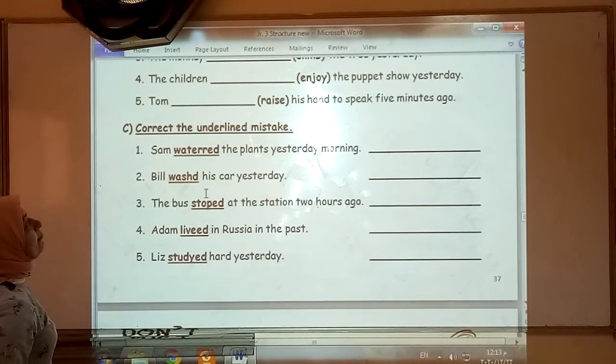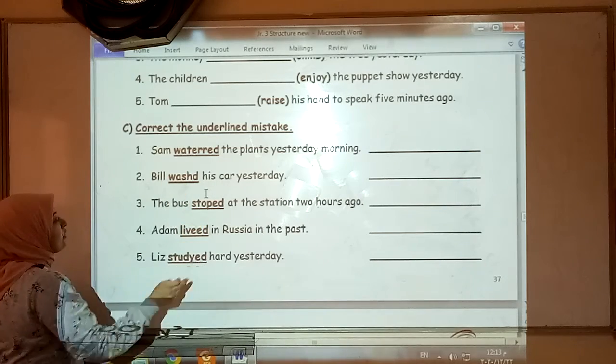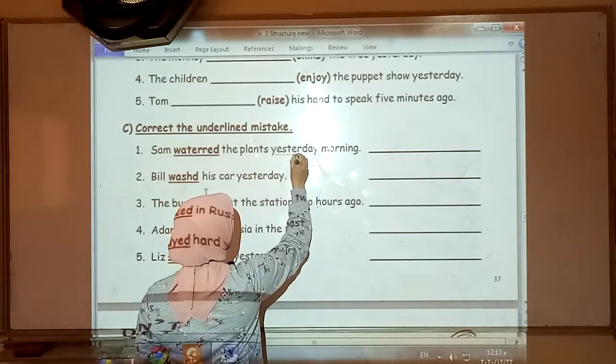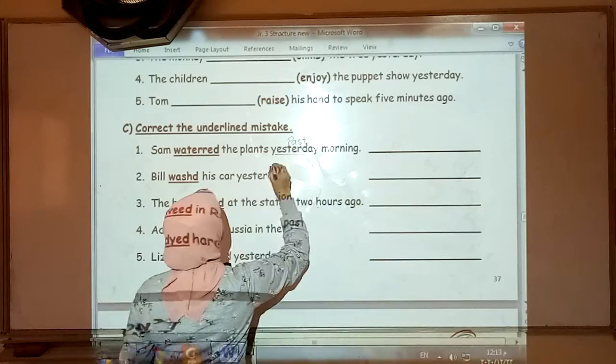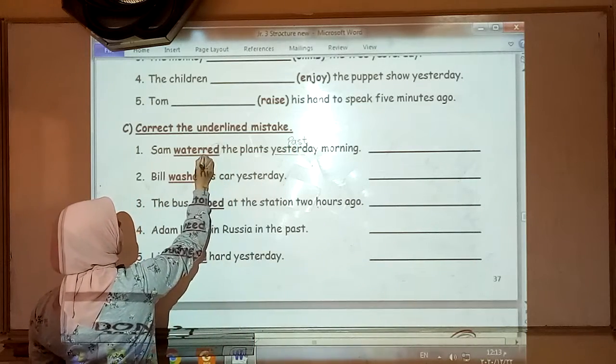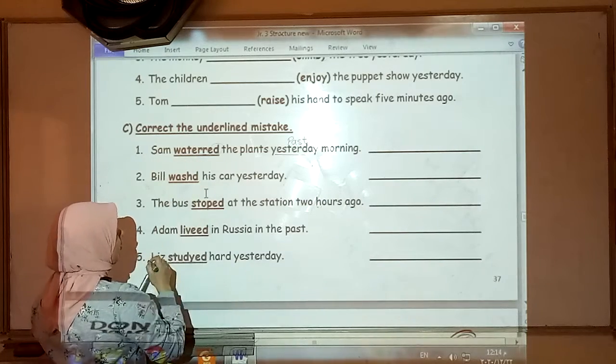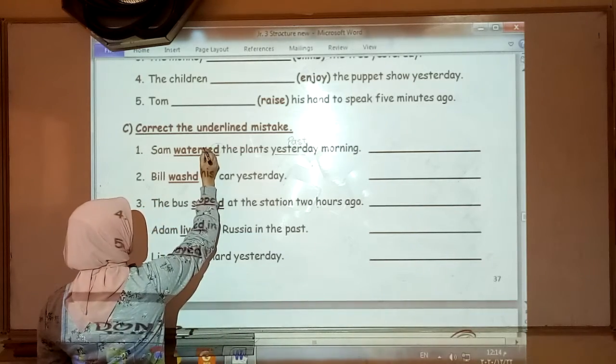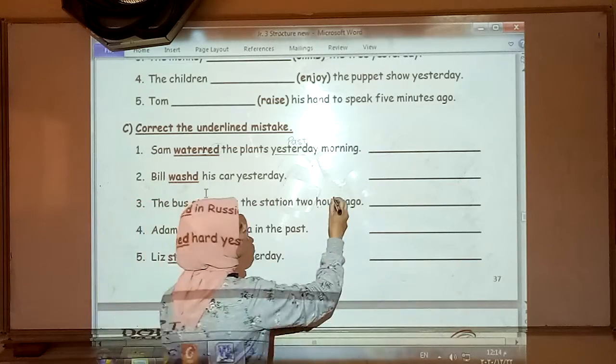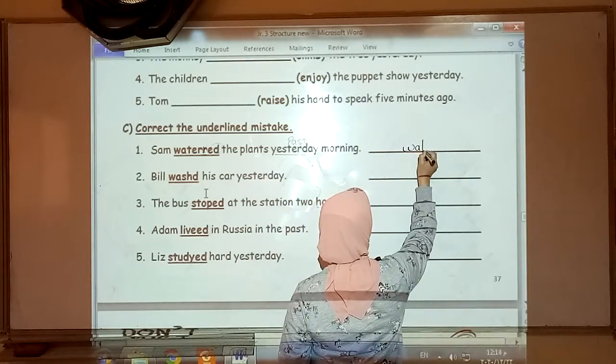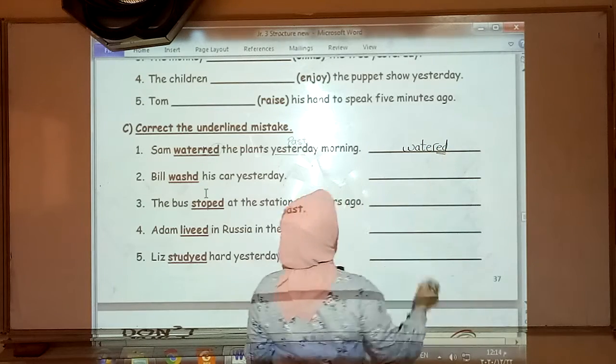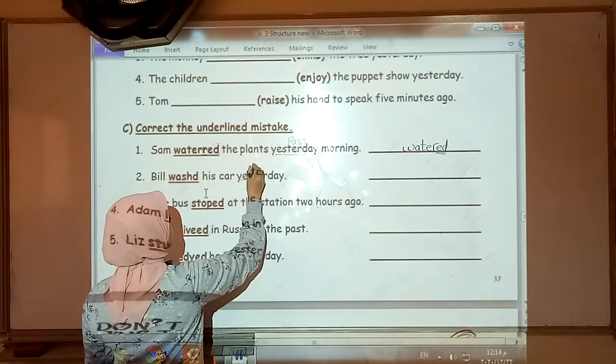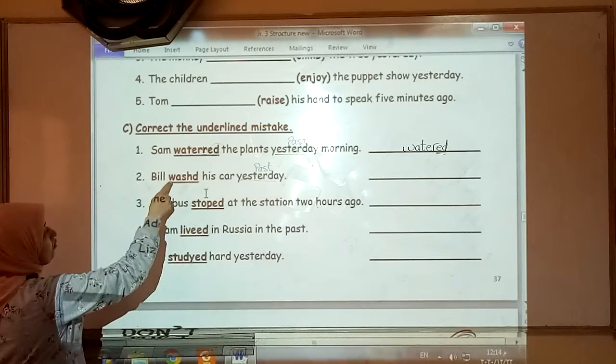Correct the underlined mistake. We have here underlined words which are wrong and we must correct them. Sam watered the plants yesterday morning. Past. They had ED but we have a double R here. Water. You must remember that water is one of the eight exceptions CVC verbs that we should not double the last letter. So, water is going to be written like that. Watered.